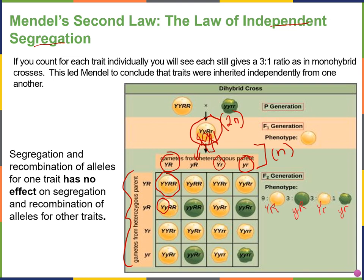By convention, we always write capital letters to the left of lowercase letters. If you look carefully at each characteristic, you can still see the 3:1 ratio from the monohybrid cross embedded within. If I only look at Y, that's 9 plus 3 equals 12 with big Y, and 3 plus 1 equals 4 with small y — simplifying to a 3:1 ratio for seed color. The same is true for shape: 12 are round and 4 are wrinkled, also a 3:1 ratio.